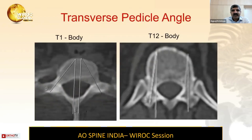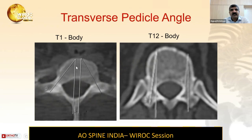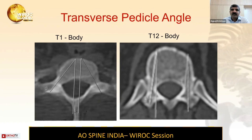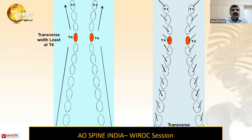The transverse pedicle angle — the angle between the transverse midline and the pedicle — is widest at T1 and narrowest at T12. In fact, at T12 you can sometimes have a negative five degrees rather than a positive angle converging inward. You should be aware of these angles when you start inserting the pedicle screw.